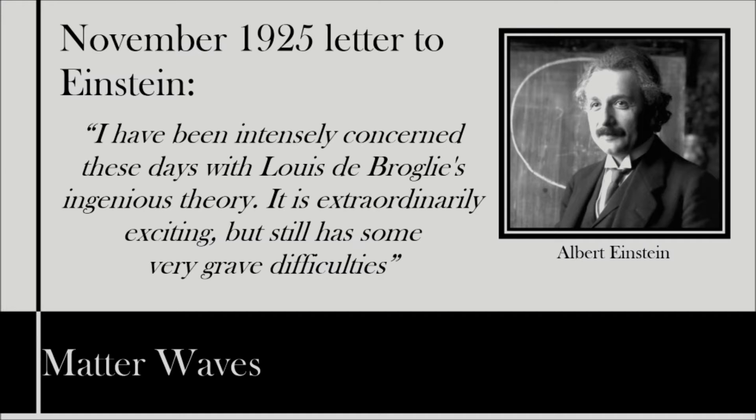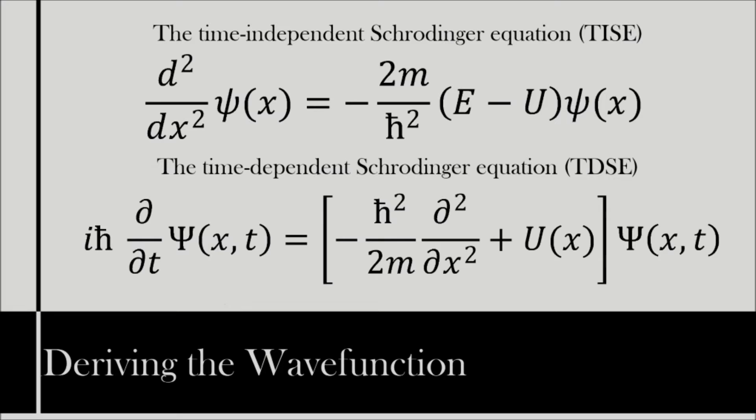A week later at a seminar on de Broglie's thesis, an audience member suggested that there should be a wave equation, and shortly afterwards, Schrödinger had derived his wave equation, a quantum wave equation which determines the behaviour of these matter wave functions.